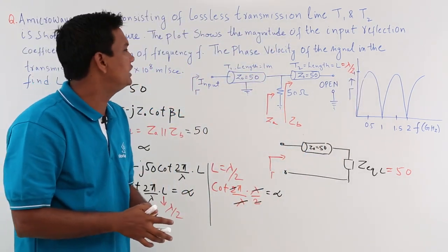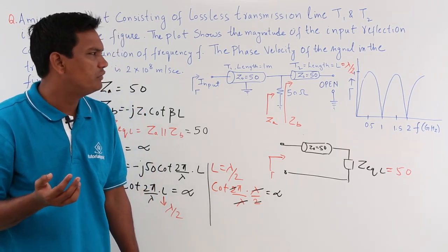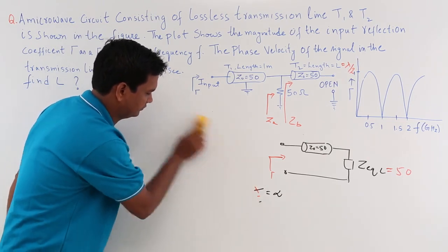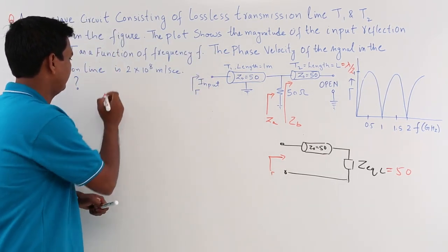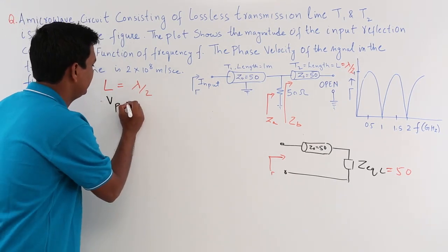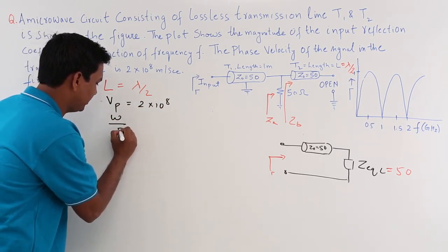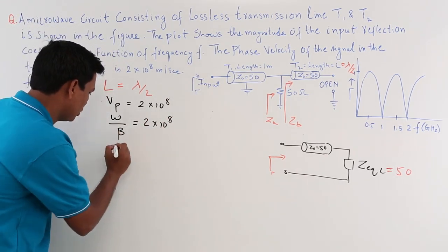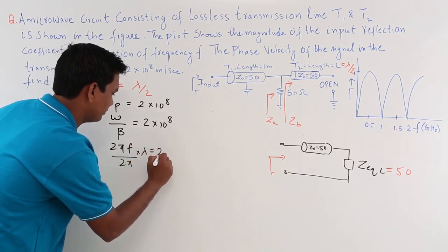We need the answer in meters, not in terms of wavelength. The phase velocity Vp = ω/β = 2 × 10⁸ m/s. Since ω = 2πf and β = 2π/λ, after cancellation we get f·λ = 2 × 10⁸.